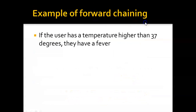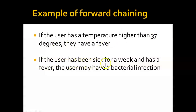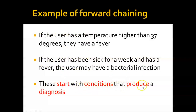As an example of forward chaining: if the user has a temperature higher than 37 degrees, they have a fever. The user states their temperature and the system concludes they have a fever. Then, if the user has been sick for a week and has a fever, they may have a bacterial infection. These rules start with conditions and produce a diagnosis.